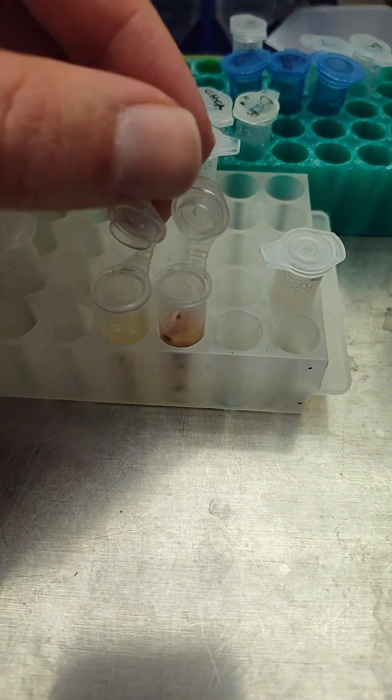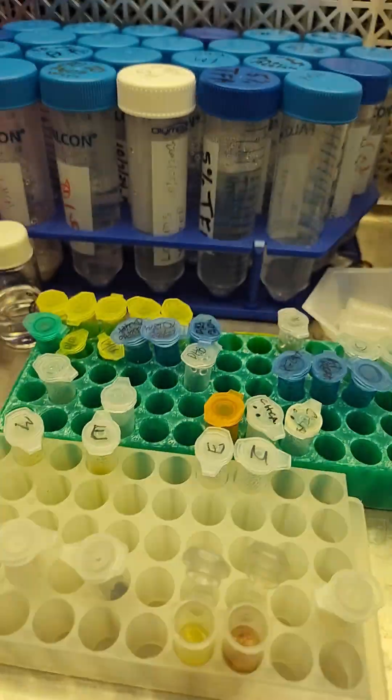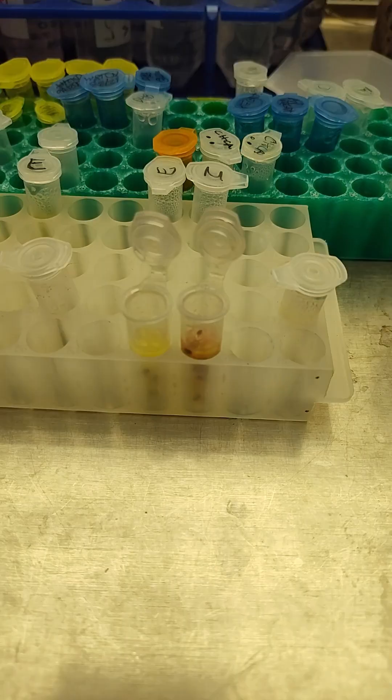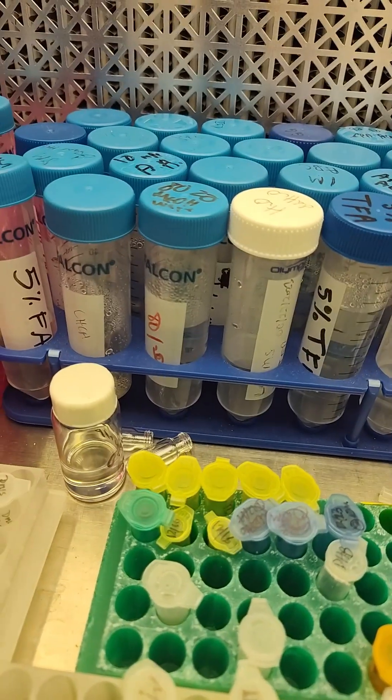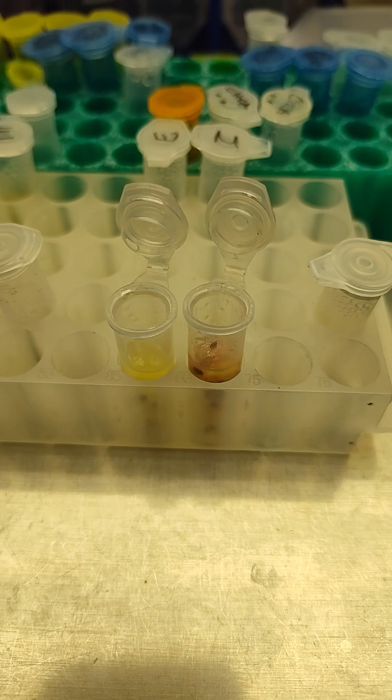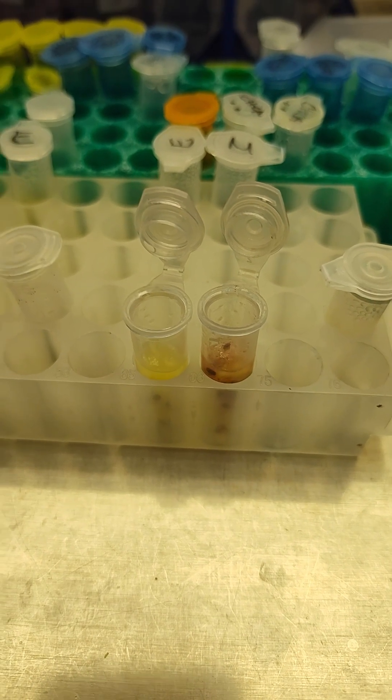The first thing we're going to do is acidify it with some of this 5% formic acid in water, and we're going to do a water extraction. Then we're going to spin that out and take some of that and dilute it into this 80-20 methanol. We're going to try to do kind of like an isolation of these red pigments and see what we can figure out.